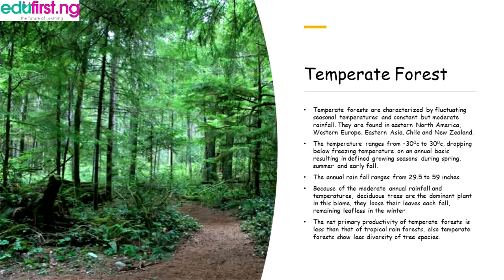Temperate forests are characterized by fluctuating seasonal temperatures and constant but moderate rainfall. They are found in eastern North America, western Europe, eastern Asia, Chile, and New Zealand. The temperature ranges from -30 degrees to 30 degrees centigrade, dropping below freezing on an annual basis, resulting in fine growing seasons during spring, summer, and early fall. The annual rainfall ranges from 29.5 to 59 inches.